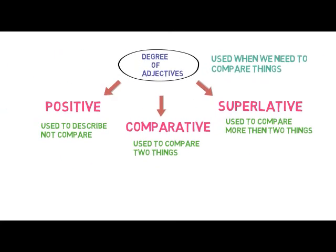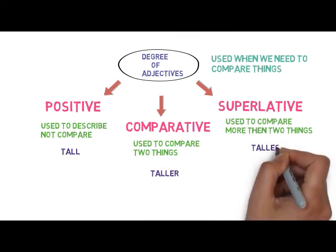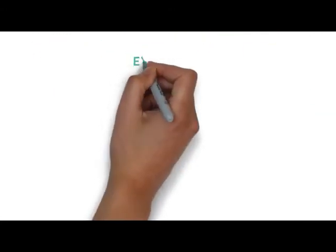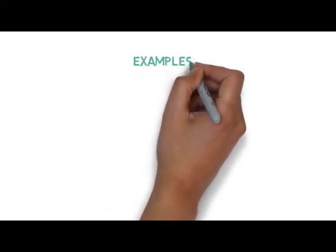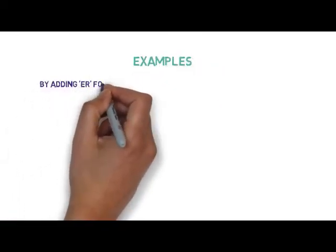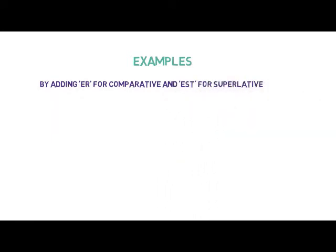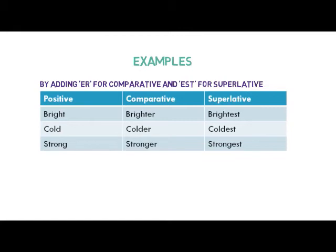Now let's go to the chart. Tall is the positive degree, taller is the comparative degree, and tallest is the superlative degree. A positive degree can be converted into comparative and superlative by adding -er for comparative and -est for superlative at the end of the positive degree. Examples: Bright, Brighter, Brightest; Cold, Colder, Coldest; Strong, Stronger, Strongest.